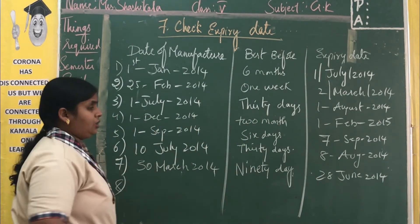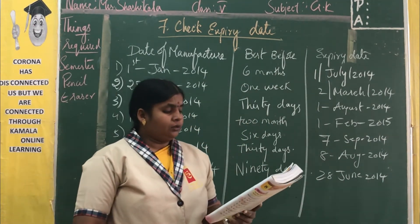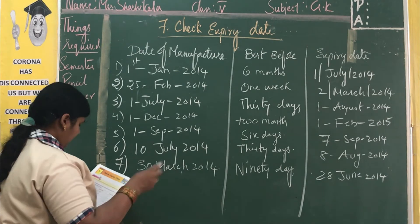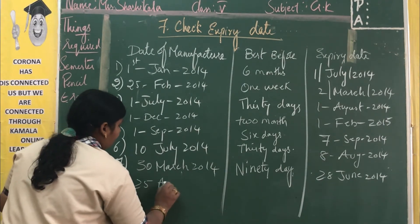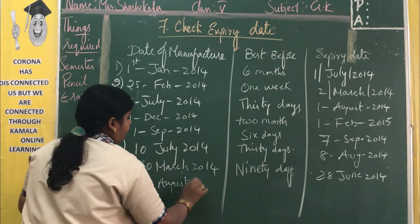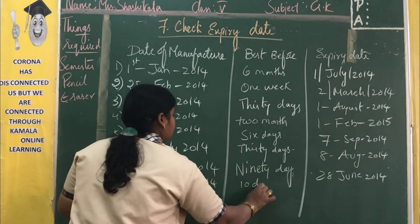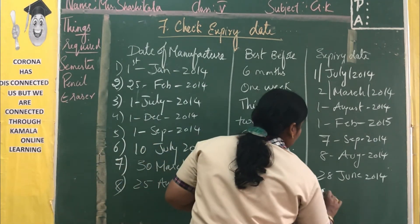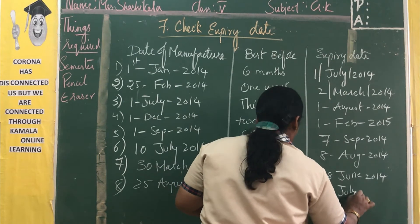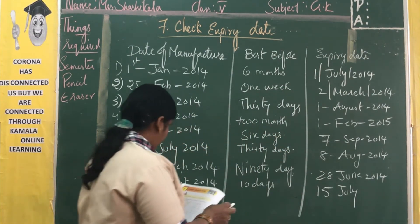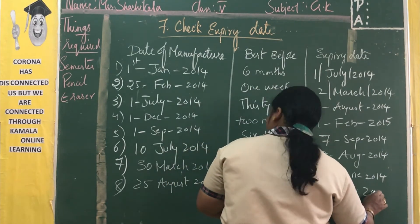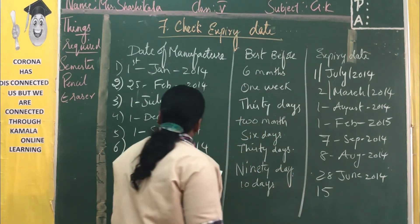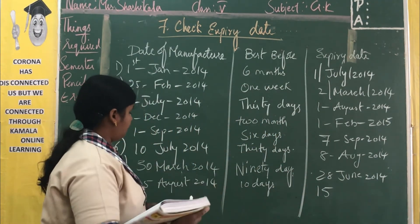Eighth one: 25th August 2014, best before 10 days. We need to calculate only 10 days after 25th August 2014. Before 10 days only we have to use it. The expiry date will be — after August comes September — so the answer is around 4th September 2014.